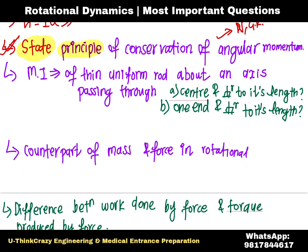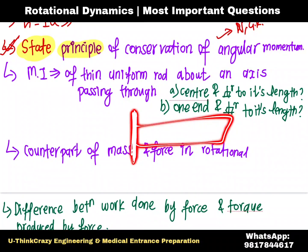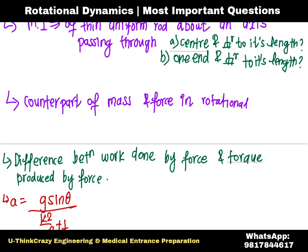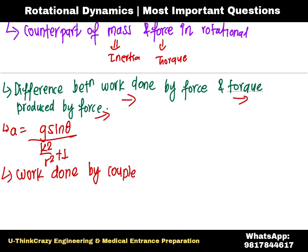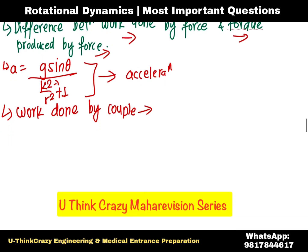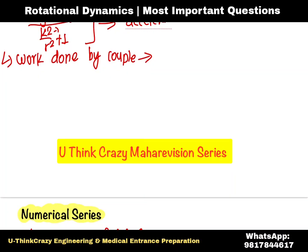The moment of inertia of a thin uniform rod about an axis passing through it. Counter mass and force in rotation are analogous: mass, inertia, force. Torque is the rotational analogue — the difference between force and torque. The acceleration of a rolling body is equal to g sin theta, and the radius of gyration equals g sin theta.